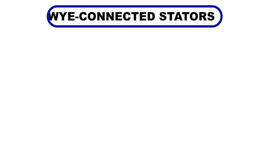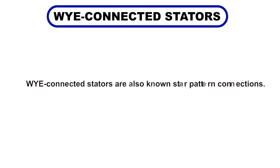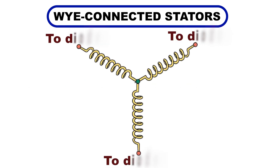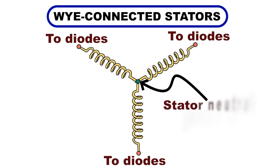Let's start with the Y winding, also known as the star pattern. This configuration gets its name because the windings connect at a central point, forming a Y shape. Y windings are the most commonly used configuration in alternators, especially when high voltage at low engine speeds is required.